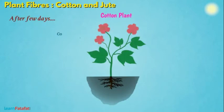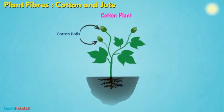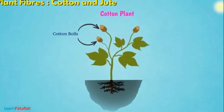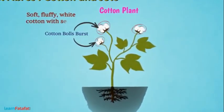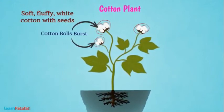Slowly the flowers change into green cotton balls. A grown cotton ball is similar in size to a lemon. After maturity, these balls burst open and we see soft, fluffy white cotton with seeds covered in it.